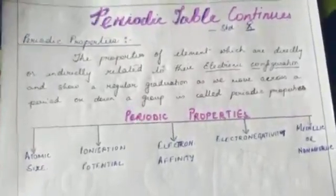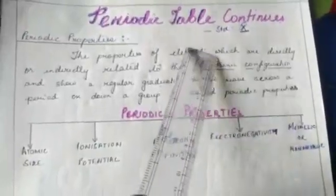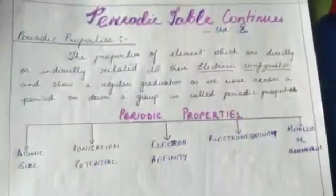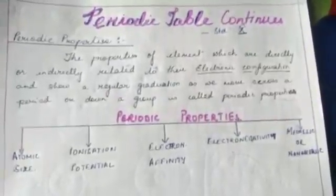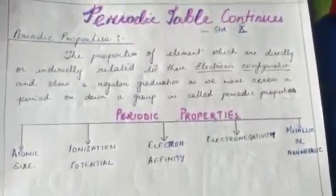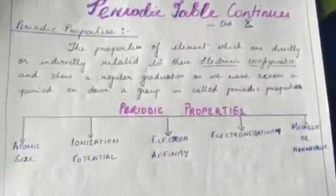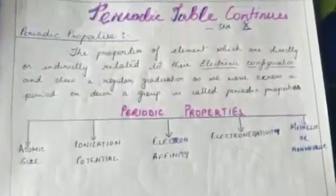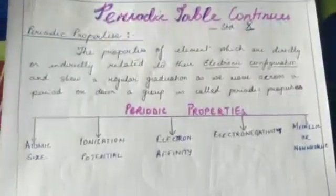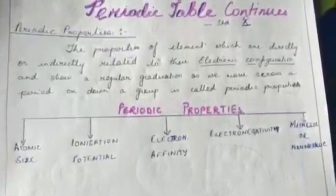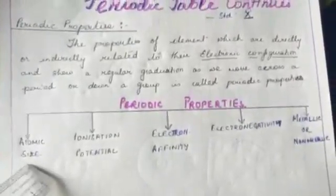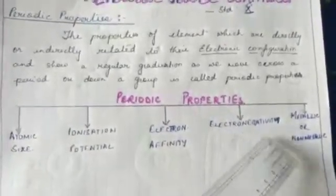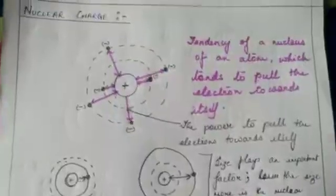Good morning dear students. Today let us continue with the periodic table — this lesson is for standard 10. We are going to discuss periodic properties. These are special properties that generally depend on the electronic configuration and show a regular graduation as we move across a period or down a group. Periodic properties we will learn include atomic size, ionization potential, electron affinity, electronegativity, and metallic or non-metallic characteristics.